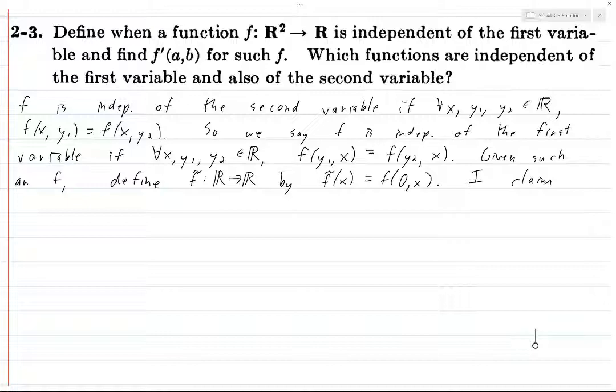what it means for f to be independent of the second variable. And that means that if for all x, y1, and y2 in R, f of x, y1 equals f of x, y2. So changing the value of the second variable doesn't change anything. So it only depends on the first variable, it doesn't depend on the second variable.